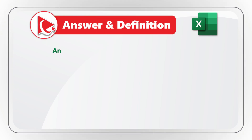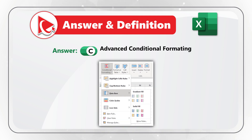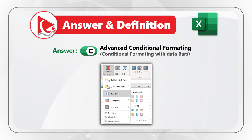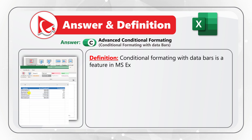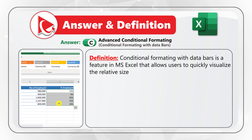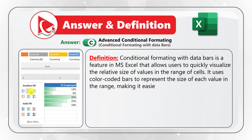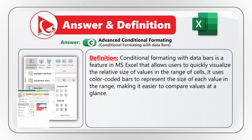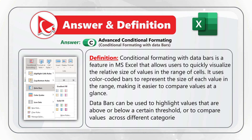I believe the correct answer is choice C — advanced conditional formatting. It is advanced because it is conditional formatting with data bars. Conditional formatting with data bars is a feature in Microsoft Excel that allows users to quickly visualize the relative size of values in a range of cells. It uses color-coded bars to represent the relative size of each value, making it easier to compare values at a glance. Data bars can also highlight values above or below a certain threshold or compare values across categories.